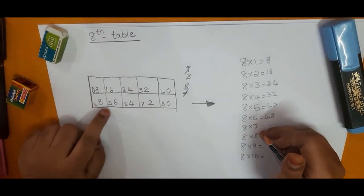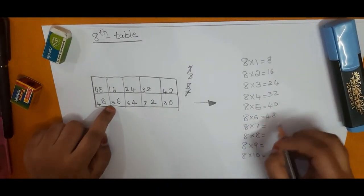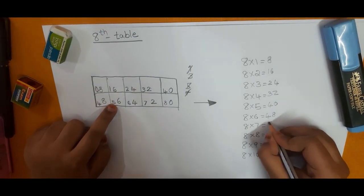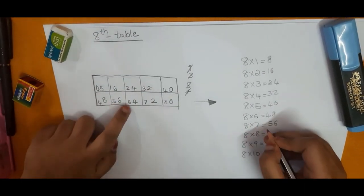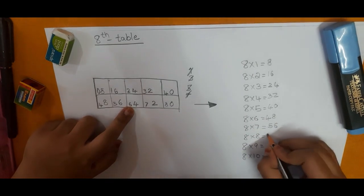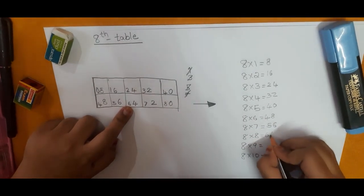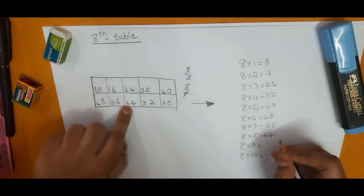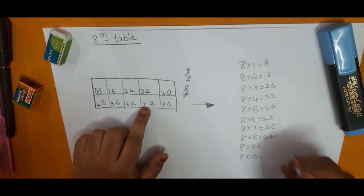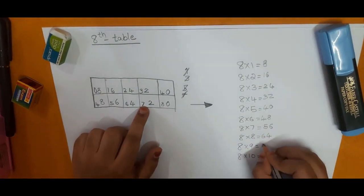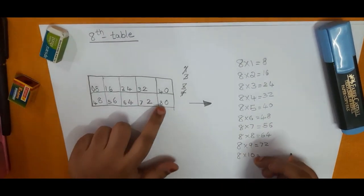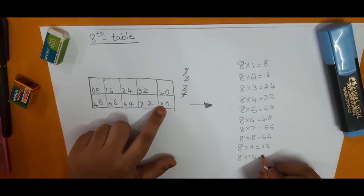Eight, seven, zero, fifty-six. Eight, eight, zero, sixty-four. Eight, nine, zero, seventy-two. Eight, ten, zero, eighty.